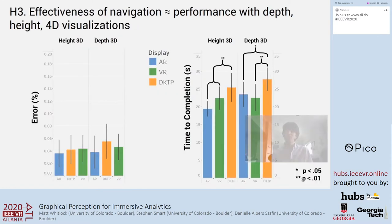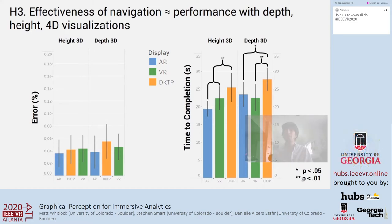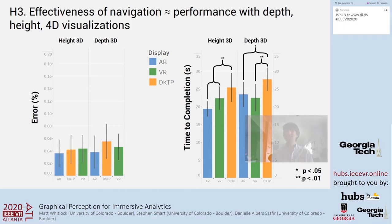We anticipated that success with the navigation system would correlate to performance for depth, height, and 4D visualizations. We saw some evidence toward this: despite comparable accuracy, participants were slower in the desktop condition for 3D visualizations that require navigation. Accuracy didn't seem to be compromised, as there's generally a good perspective when assessing height and depth, but it just took longer for participants to navigate there.